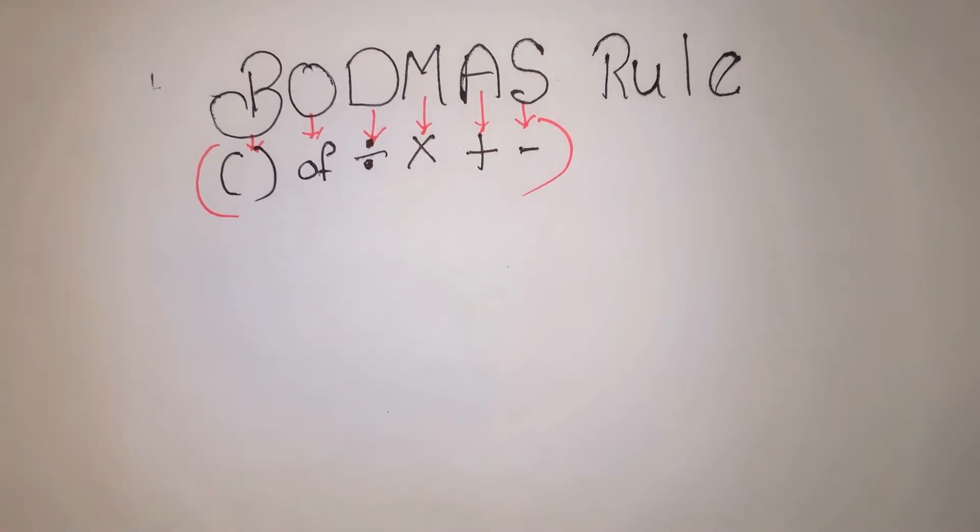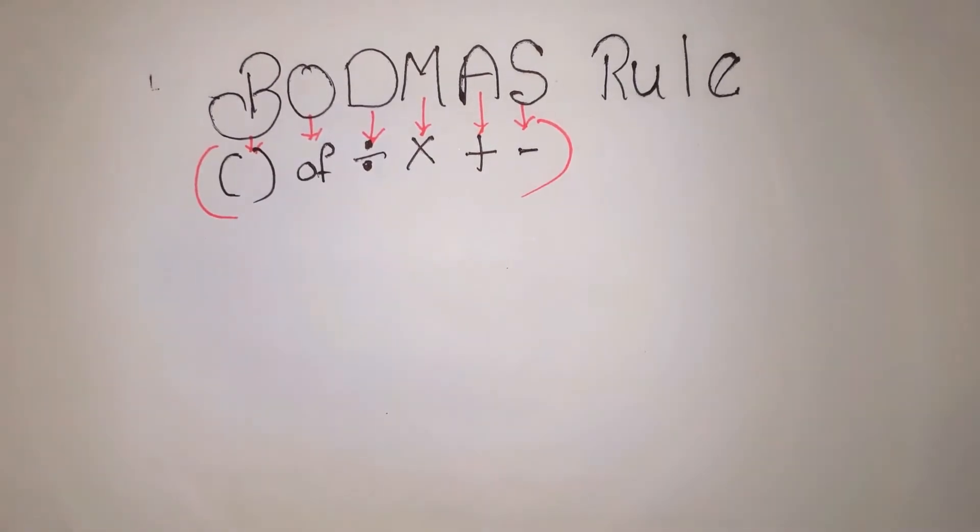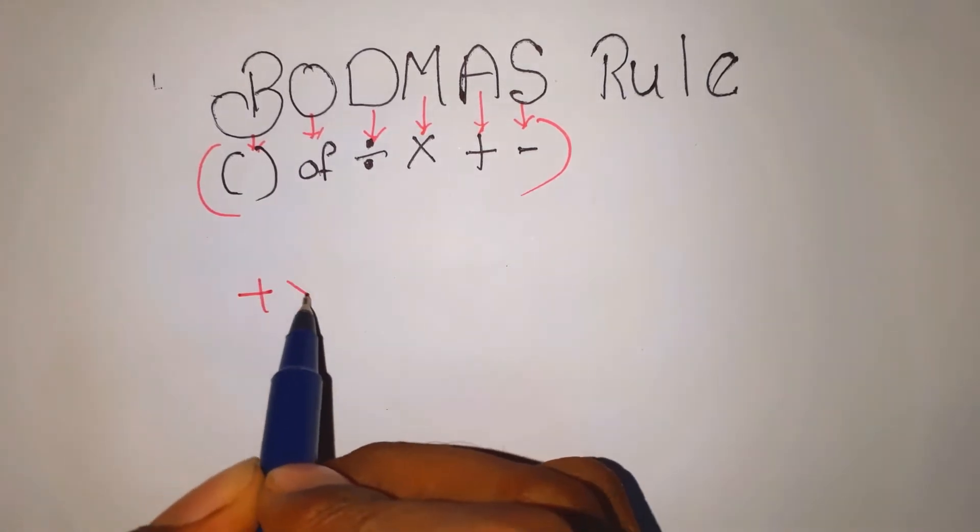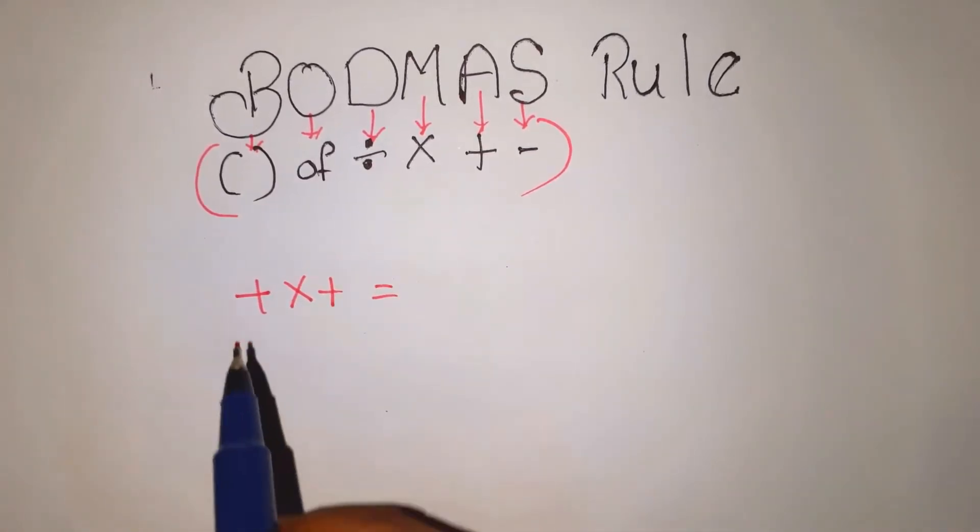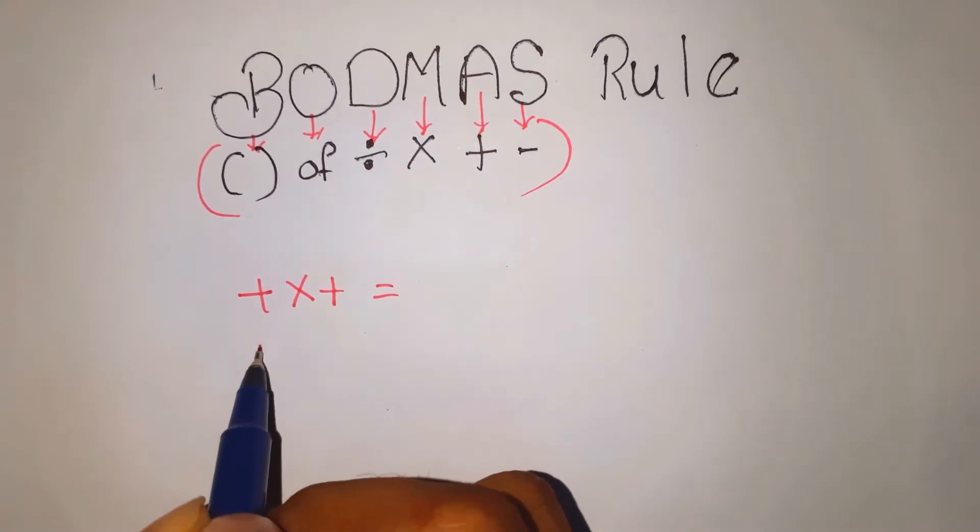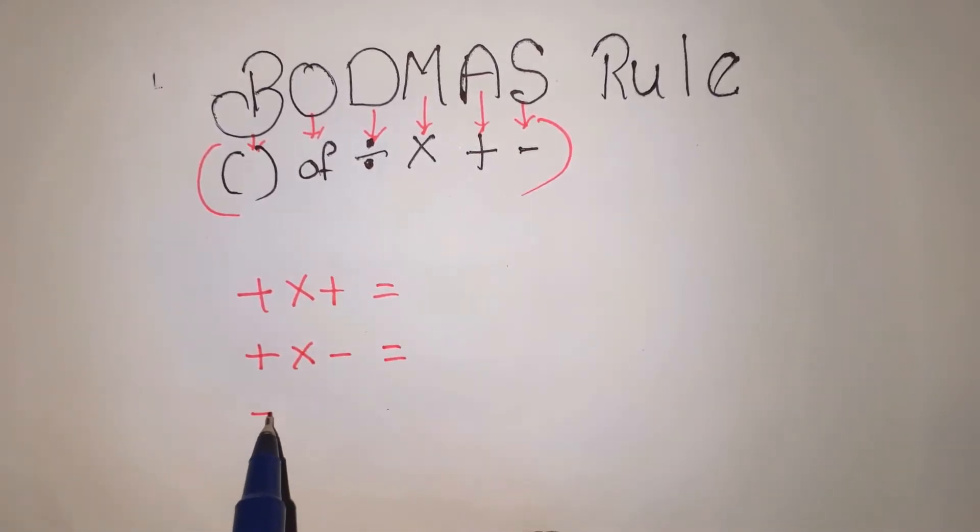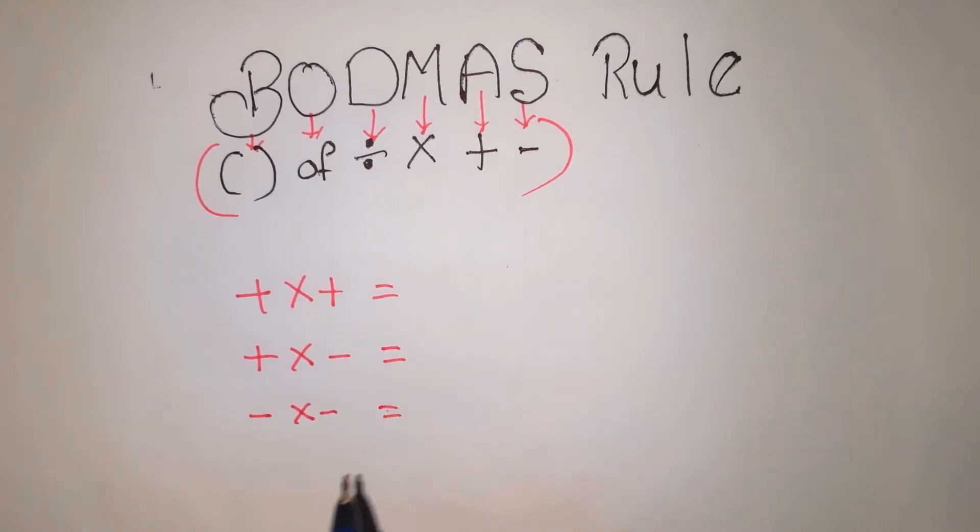First, I will show you the basic rule. Plus into plus equals plus. Next, plus into minus equals minus. Next, minus into minus equals plus. Next, minus into plus equals minus.